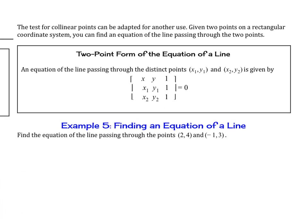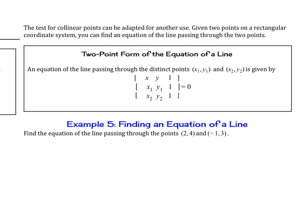The test for collinear points can be adapted for another use. Given 2 points in a rectangular coordinate system, you can find the equation of the line passing through the 2 points. So here is the equation for 2-point form of the equation of a line. So if you have distinct points x1, y1 here, notice we'll put that in this position here, and x2, y2 will go here. So notice we're just going to plug in x and y here, and then on this, this is just the 1.